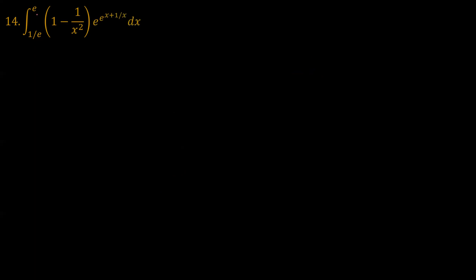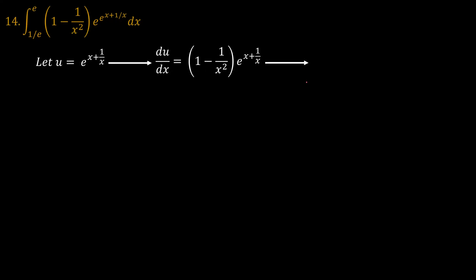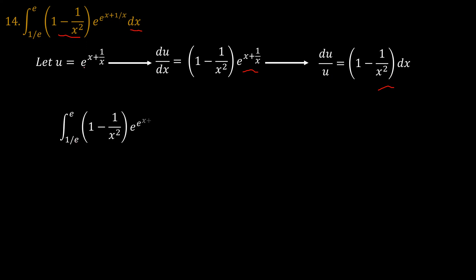Problem 14 is the integral from x = 1/e to x = e of a function. Let u = e^(x + 1/x). Then du/dx = (1 − 1/x²)·e^(x+1/x), so du = (1 − 1/x²)·e^(x+1/x) dx. Looking at the limits: when x = 1/e, u = e^(e + 1/e); when x = e, u is the same value e^(e + 1/e). Since the lower and upper limits are equal, the integral is zero.